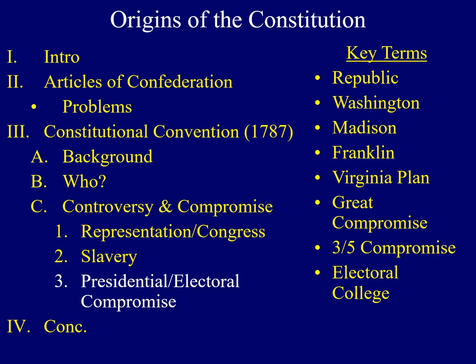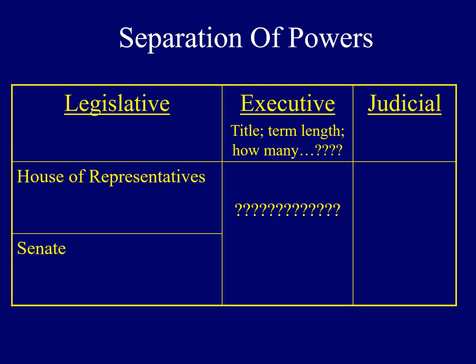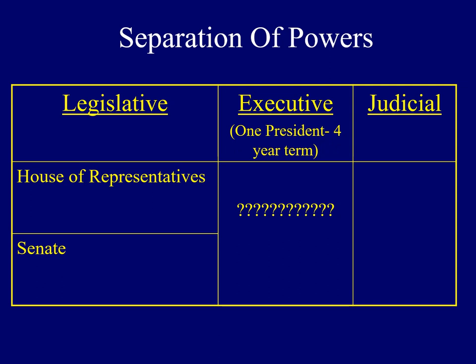The last controversy I'd like to address dealt with electing the President of the United States, and it resulted in the creation of the Electoral College. There were lots of questions dealing with the Chief Executive: what should they call this person, how long should the term be, how many should there be — should there be two presidents, three, or just one? Eventually, they decided to choose only one President, who would be elected for one four-year term. But still there were lots of questions about how to choose this individual.